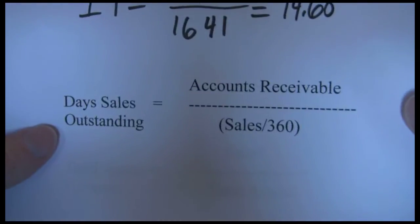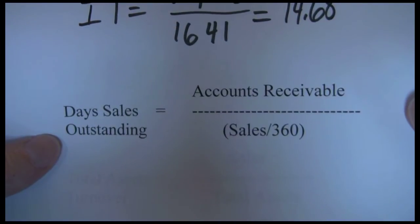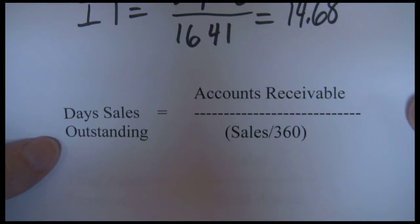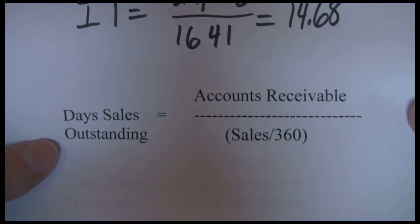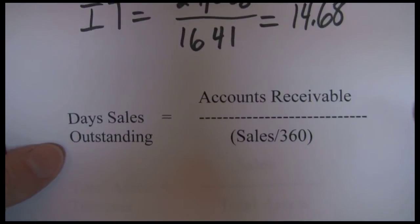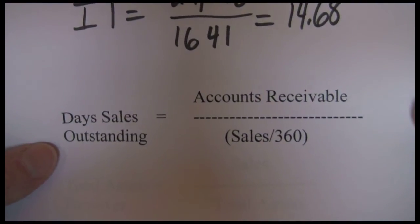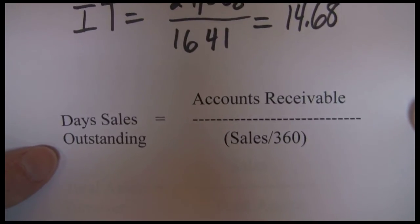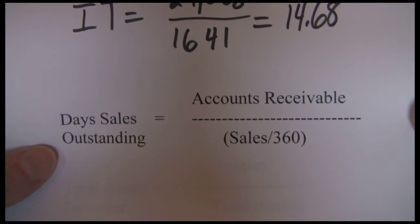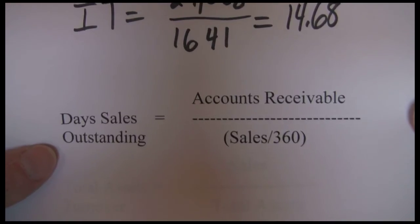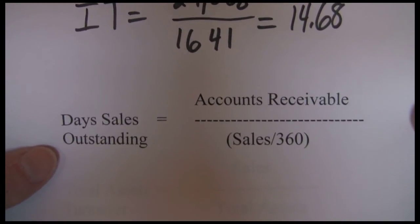The next ratio is day sales outstanding: accounts receivable divided by sales per day. The idea is that we're trying to figure out how long on average it takes us to collect our credit sales. The longer it takes to collect, all else equal, the worse off we are. Two factors: one is time value of money — the sooner we receive our money the more it's worth to us. And second, the longer it takes to collect accounts receivable, the more likely it is that people won't pay and we'll run into bad debt expense.